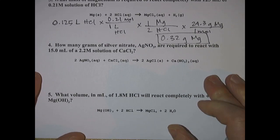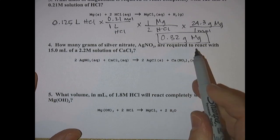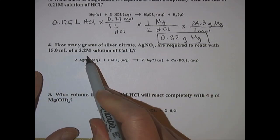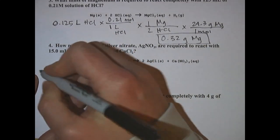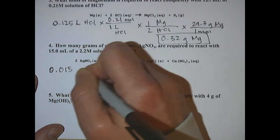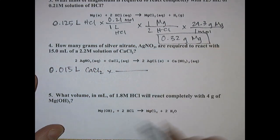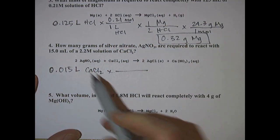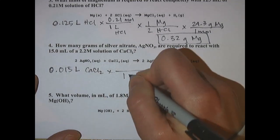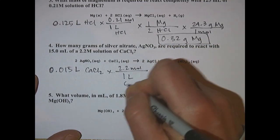Number four: how many grams of silver nitrate are required to react with 15 milliliters of 2.2 molar solution of calcium chloride. So 15 milliliters, we'll start there, 0.015 liters of calcium chloride, and that is 2.2 molar, that means in one liter you'd have 2.2 moles of CaCl2.